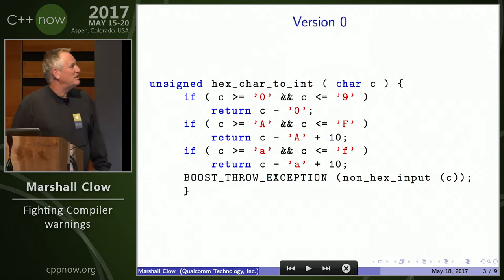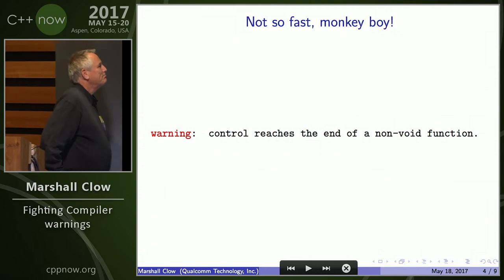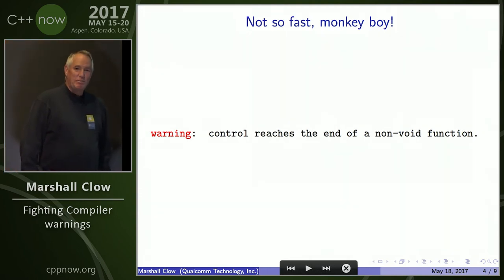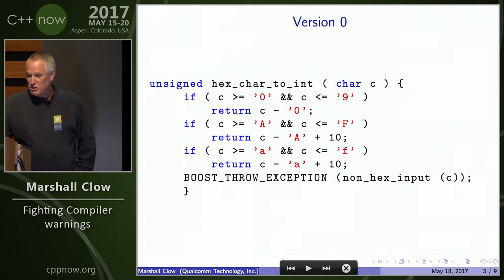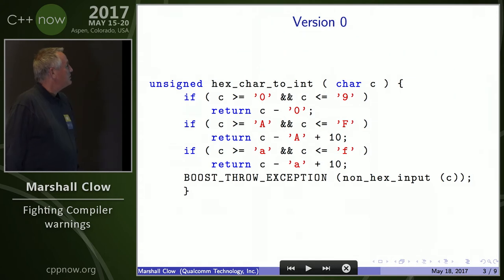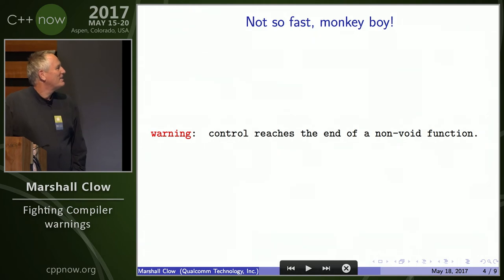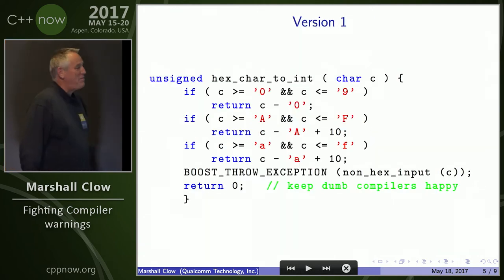I said great, I checked it in, and I was happy. And then I started getting bug reports: "Control reaches the end of a non-void function." Whiskey Tango Foxtrot? Where does it reach the end of the function? The compiler is flat out wrong here. We won't name the compiler, but it comes from a company in Redmond. So fine — fixed. Compiler shut up and we're good.